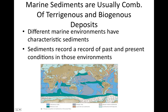Most marine sediments are some combination of the two most abundant types — terrigenous and biogenous sediments. Different marine environments have different characteristic sediments, and because of this, sediments record a history of past and present conditions. As the environment changes throughout time, different types of sediments are deposited, and that record can give us information about how that environment has changed.